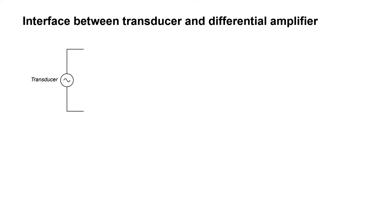Consider a transducer — for example, a temperature transducer or temperature sensor — something that produces a very small signal between two pins coming out of it. This could represent any small signal, and what we intend to do is to amplify that small signal.